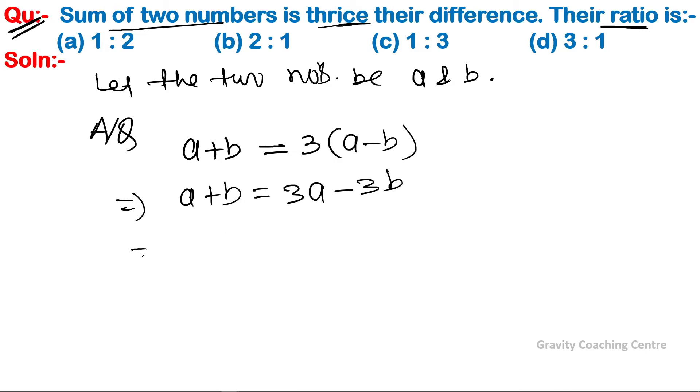a minus three b. So implies that a minus three a equal to minus three b. Bringing b to the right side, we get minus two a equal to minus four b. Minus and minus cancel.